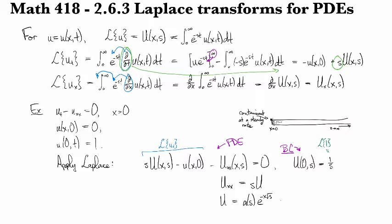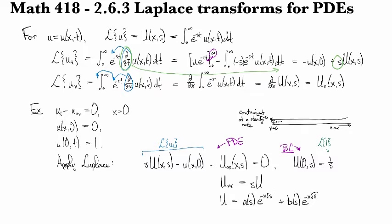And you find out that capital U looks like some arbitrary function of s times e to the minus x root s plus b(s) e to the x root s. And you might be asking me, how did you know to set it up with that basis of positive and negative exponentials and not say your usual favorite and write it as a(s) cosh plus b(s) sinh?